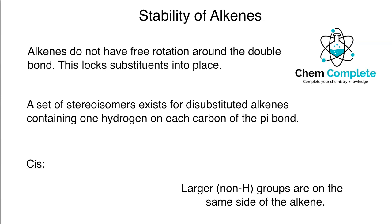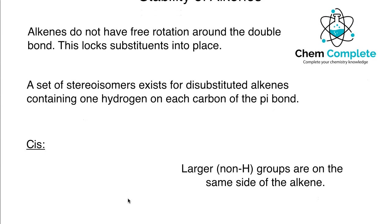When we look at double bonds, we want to first consider that there are stereoisomers that can be present. They primarily exist for disubstituted alkenes, but this is also true of trisubstituted and tetrasubstituted alkenes — where the disubstituted have one hydrogen on each carbon of the pi bond, and the tri and tetra can have other groups. We're looking at the size of those groups and how they prefer to be oriented.